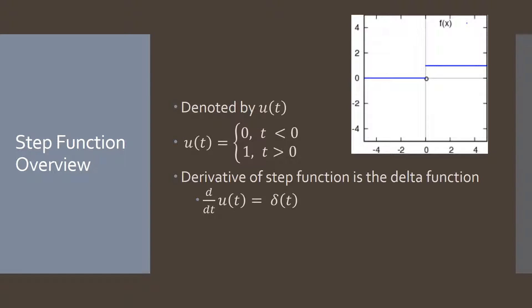Another thing we're going to discuss is the step function, denoted U(t). Before time zero, this function has a value of zero, but when time is greater than zero, it has a value of one — that's what the graph depicts, taking a step up. We can think of the step function as basically turning on other functions, because now it gives them a value where before it didn't. This will come in handy later when we're solving.